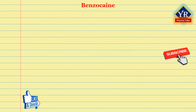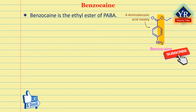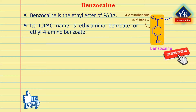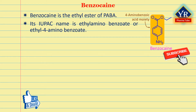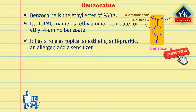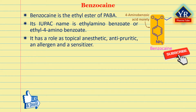Benzocaine is structurally an ethyl ester of para-aminobenzoic acid. Its IUPAC name is ethyl amino benzoate or ethyl 4-aminobenzoate. It is an ester of para-aminobenzoic acid lacking the terminal diethylamino group of procaine, with anesthetic activity. It is a benzoate ester having 4-aminobenzoic acid as the acid component and ethanol as the alcohol component.